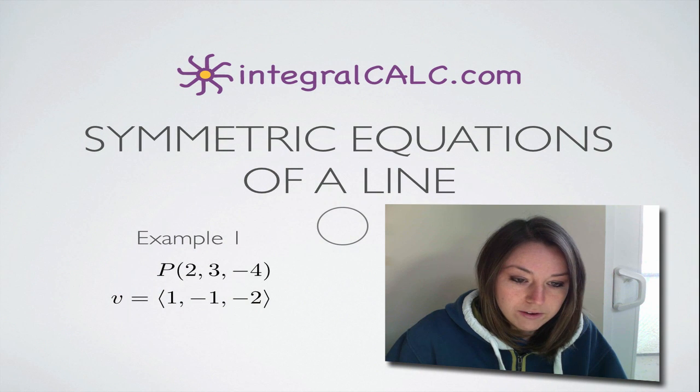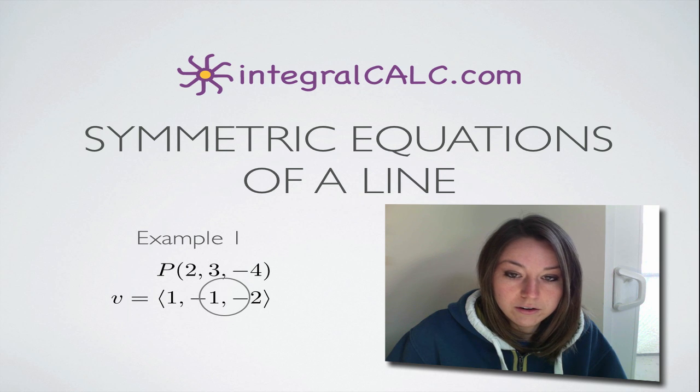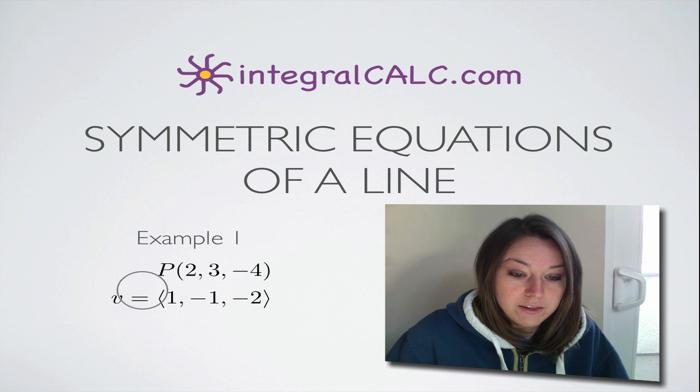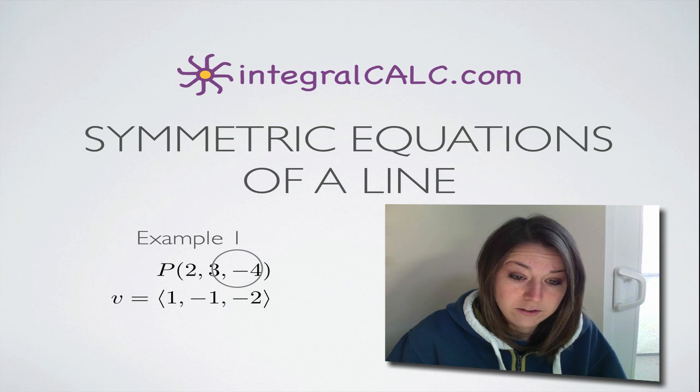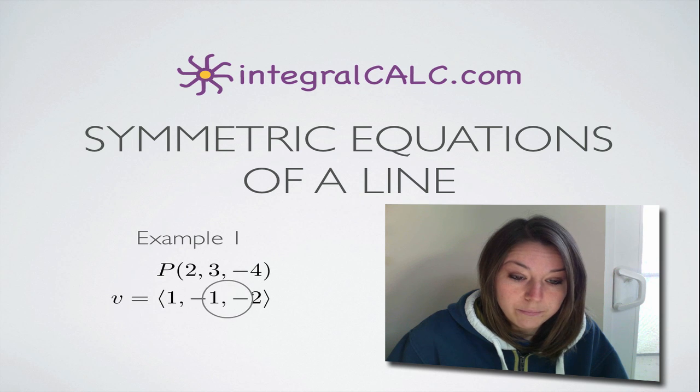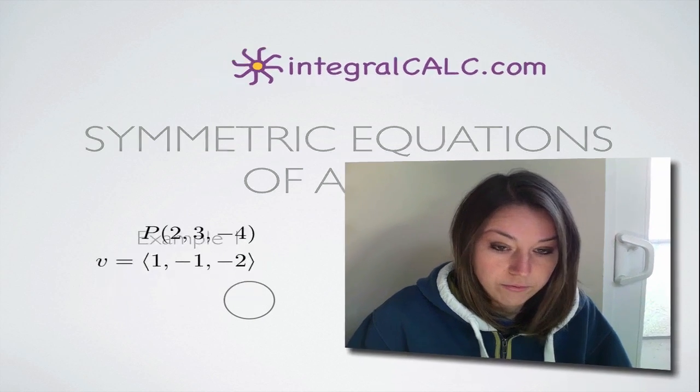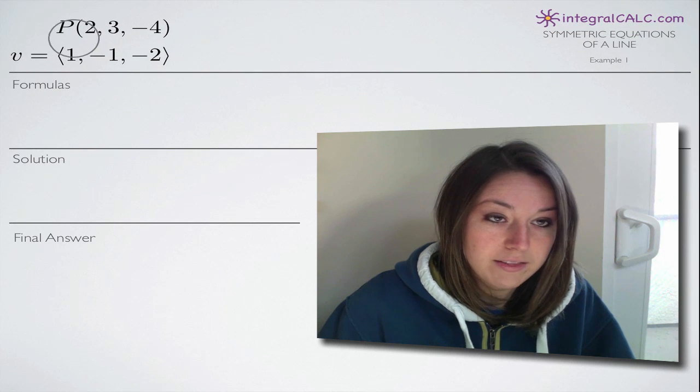In our problem, we're given a point P and a vector v, and our line is represented by the point and the vector. It's passing through this point P and the vector represents the direction numbers. We're going to find the symmetric equations of the line represented by these two things.